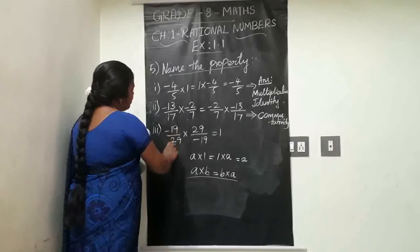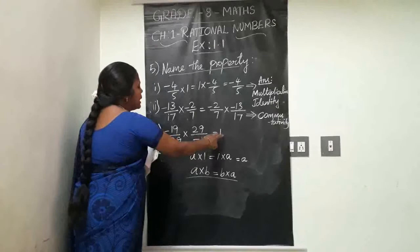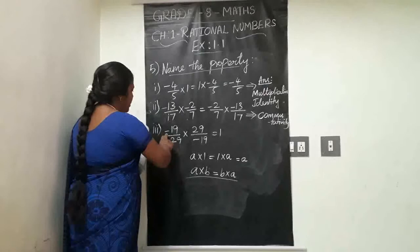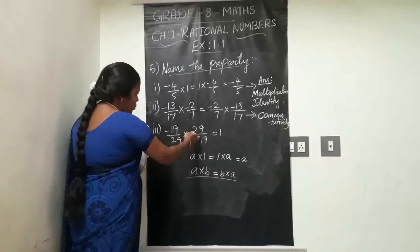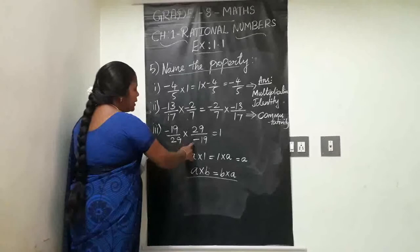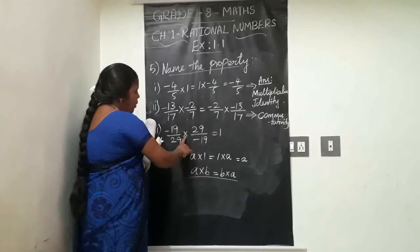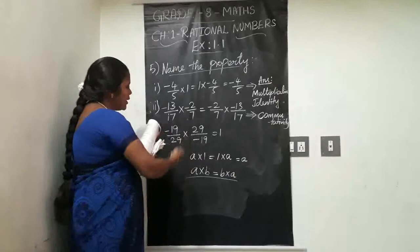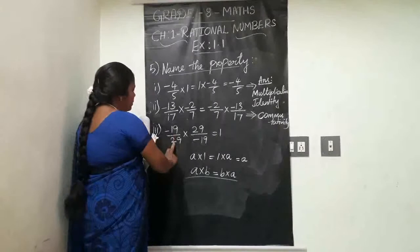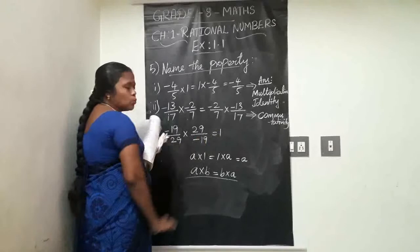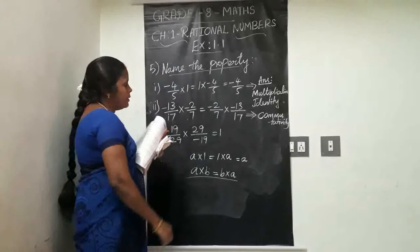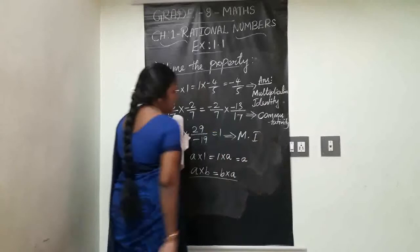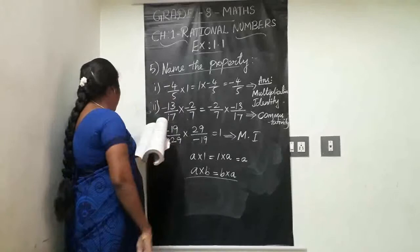Third question: minus 19/29 times 29/minus 19 equals 1. The first number is minus 19/29, and the second number is its reciprocal — 29/minus 19. Both are multiplicative inverses of each other; their product is 1. So the property used here is multiplicative inverse.